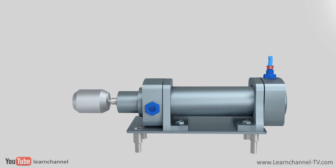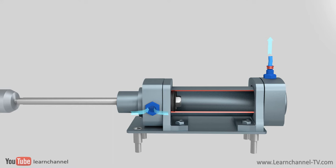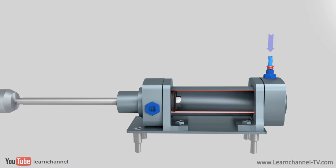In single-acting cylinders, only one chamber is inflated with compressed air. That's why a piston force is built up in only one direction. The inbuilt spring has the only function to retract the piston automatically when no pressured air is switched to the cylinder.